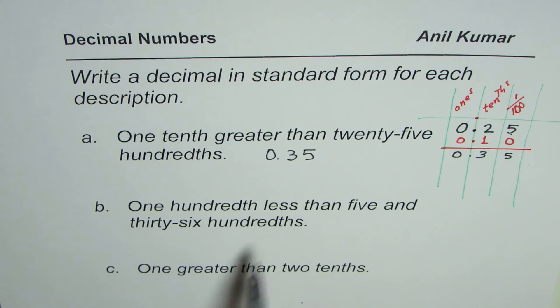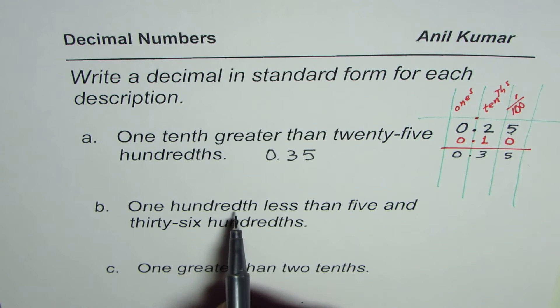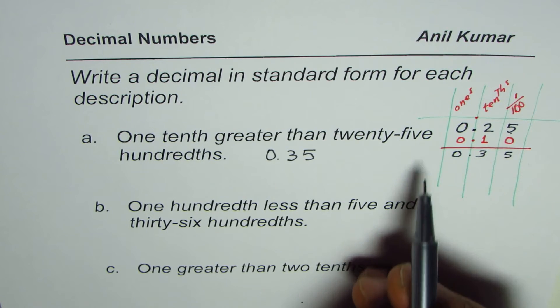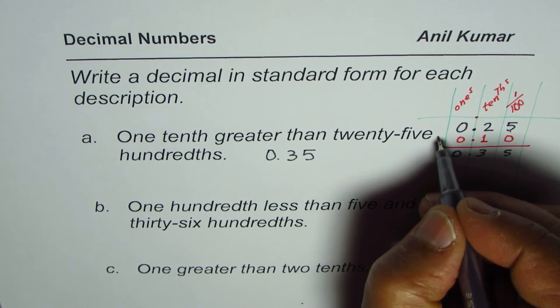Likewise, let's do the others. Now, the next one here for us is one-hundredth less than. So this time, we will take away. We will not add. Last time, we added.